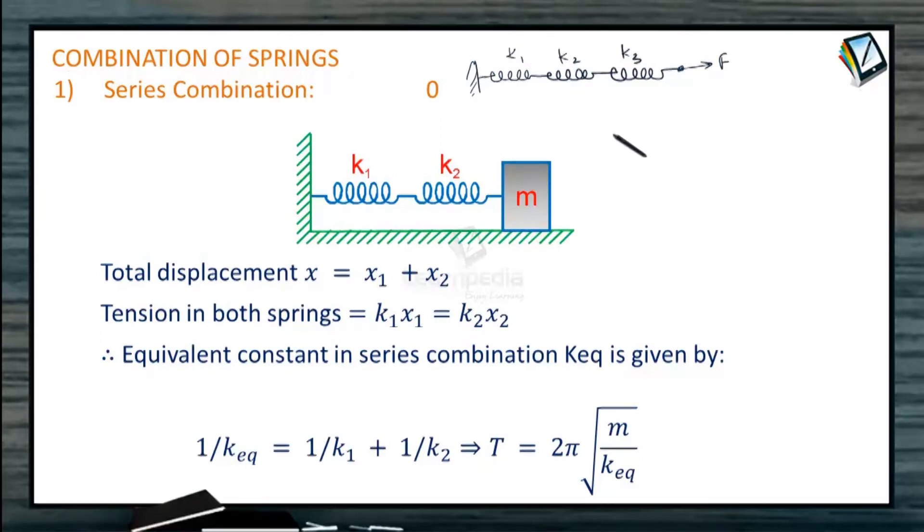K2 and K3. If we make free body diagram for all these three springs, then it will look like F force is acting at this end. So this end will apply some force say F1 and the equal amount of force will be on this F1.